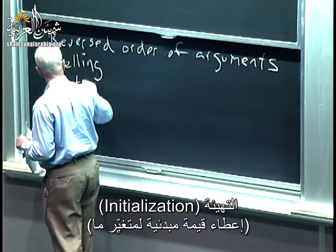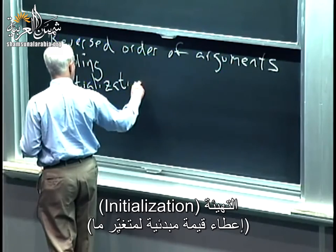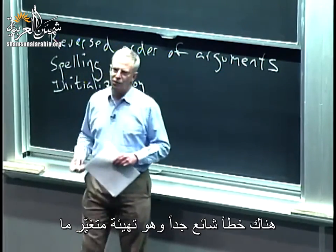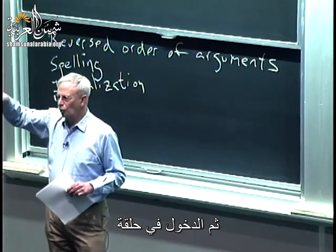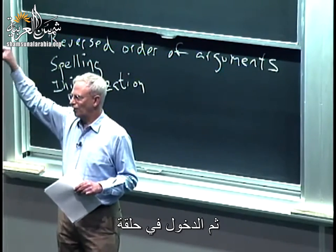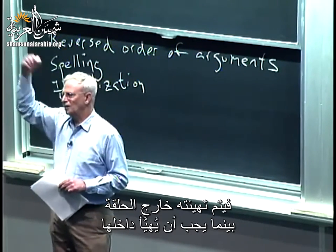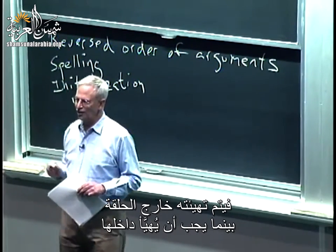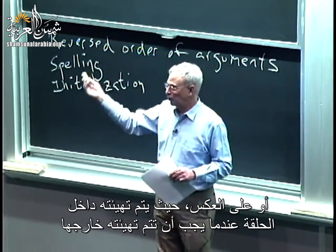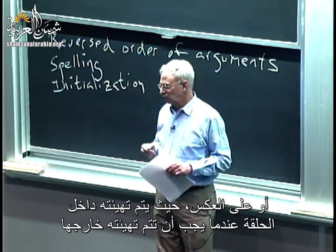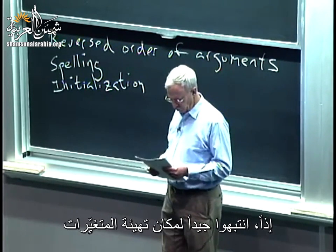Initialization. A very common bug is to initialize a variable, go through a loop, and then forget to reinitialize it when it needs to be reinitialized again. So it's initialized outside the loop when it should be inside the loop, or conversely, inside the loop when it should be outside. Look carefully at when variables are being initialized.